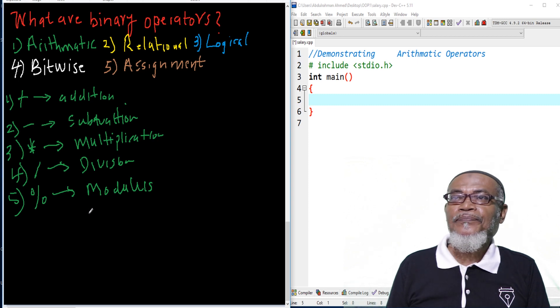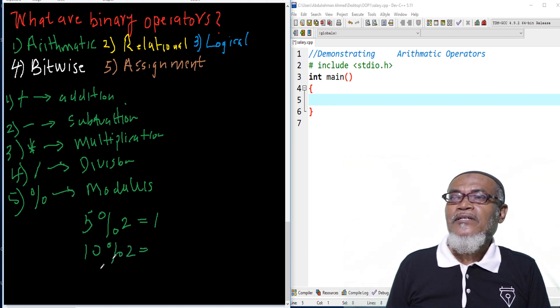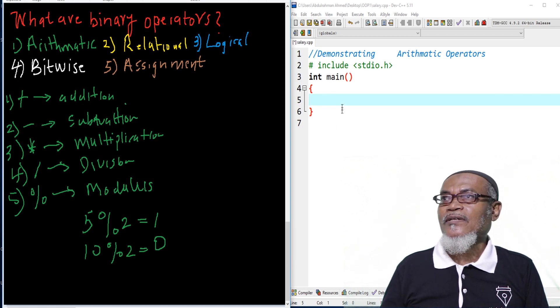Let's take for example, if I say 5 modulus 2. What is 5 divided by 2, and what is the remainder? The remainder of it actually is 1. That will become modulus. But if I say 10 modulus 2, what does it mean? 10 divided by 2, and what will be the remainder? 0.